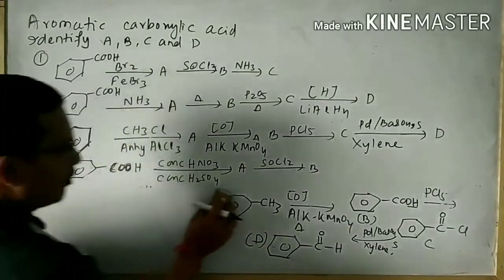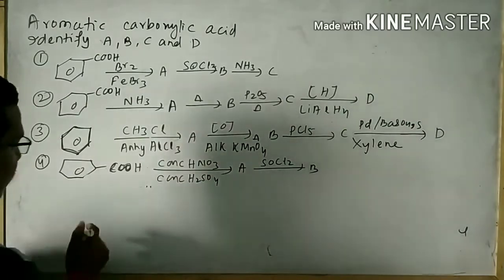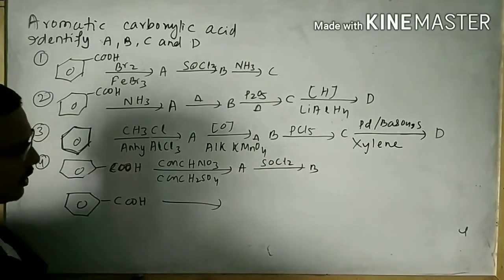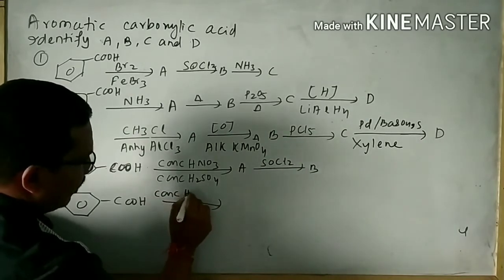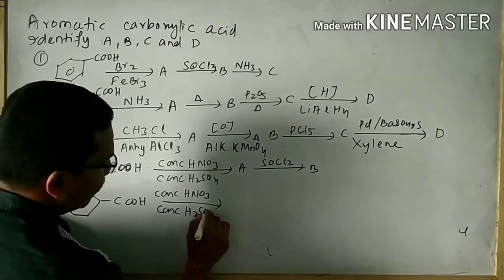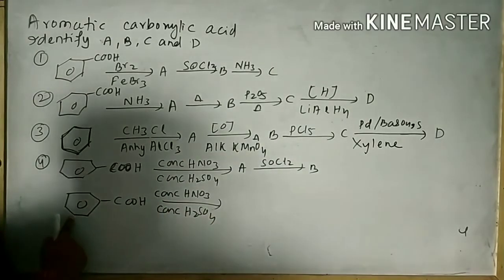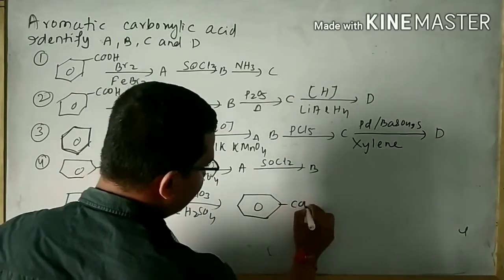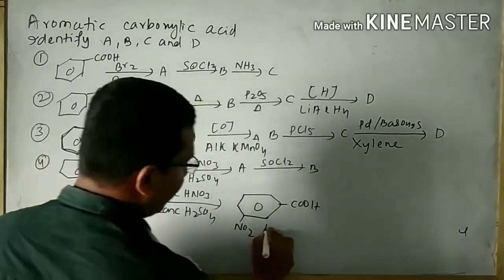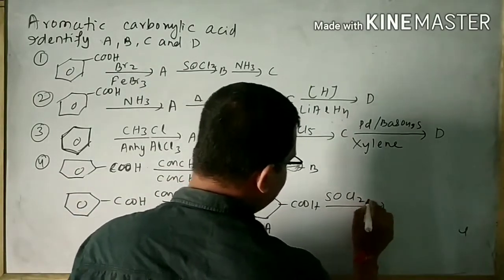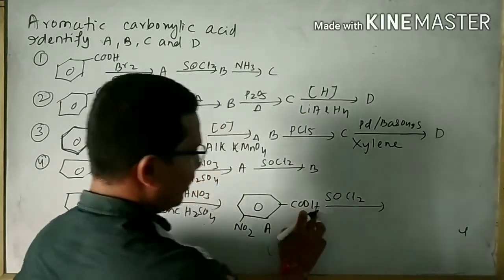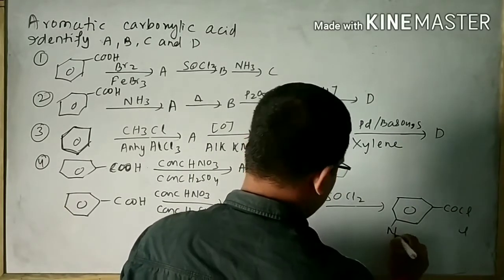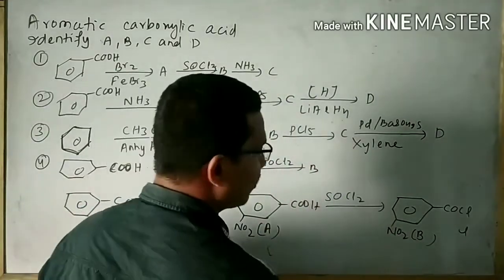Now I will solve question number 4. This is your benzoic acid. It is subjected to reaction with concentrated HNO3 and concentrated H2SO4 — that means it undergoes nitration. So NO2 group will be attached to the meta-position because COOH is a meta-directing group. So we can write this, and this is the product A. Now it is subjected to reaction with SOCl2 — then OH will be removed and chlorine will be attached. This is the B product.